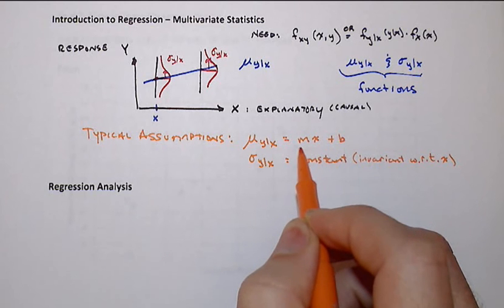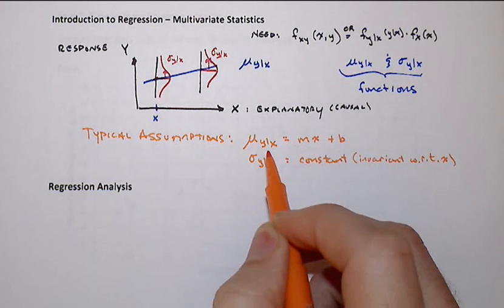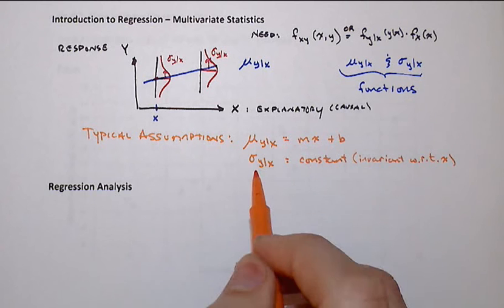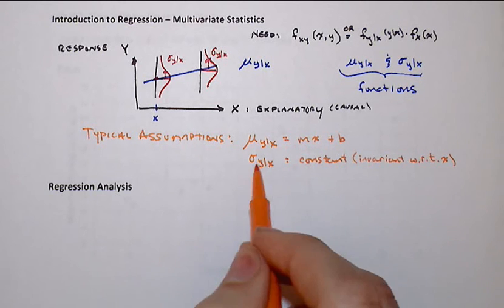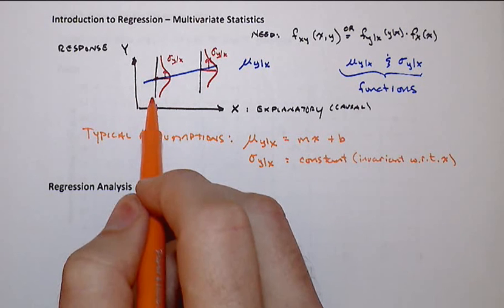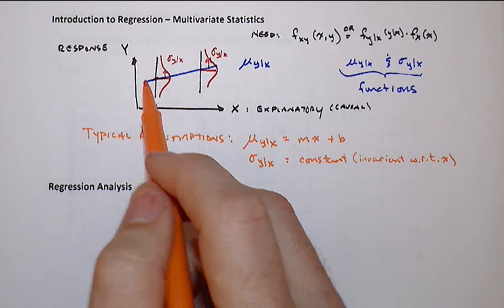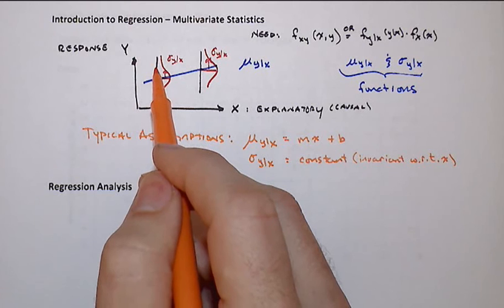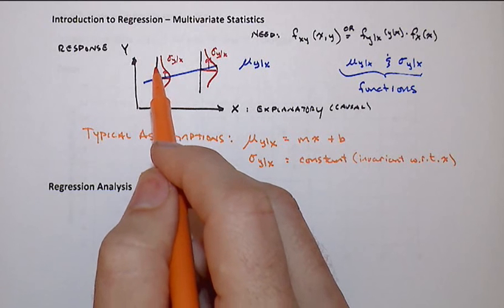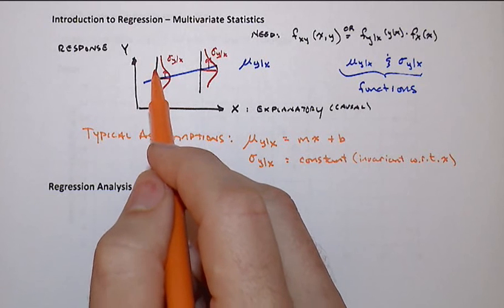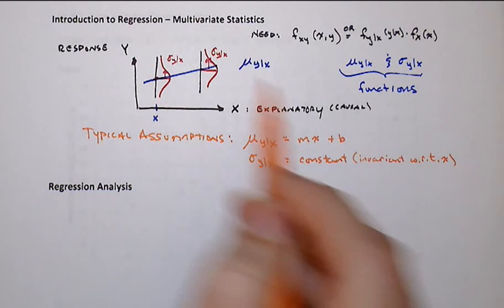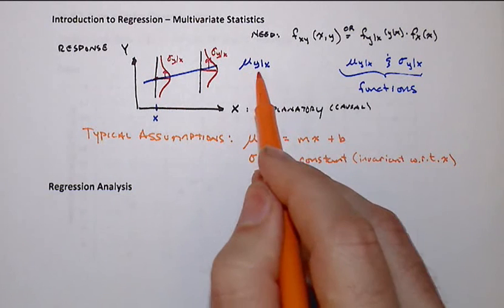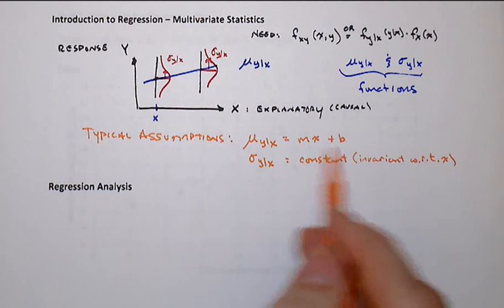So it still comes back to this linear model idea. Now, this one here, we tend not to relax because this is going to end up being essentially what we call the error. And it's the error because a specific value of y might be up in here. And that's an error with what the predictor model is going to give us, the blue line, this one given here by the conditional mean.